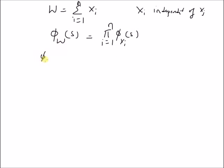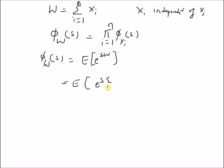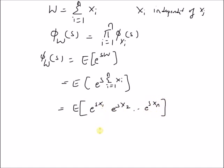Starting with the definition of the moment generating function, we have the expectation of e^(s·W). Using the definition of W, this is the expectation of e^(s · sum_{i=1}^{n} x_i), which equals the expectation of e^(s·x_1) · e^(s·x_2) · ... · e^(s·x_n), i.e., a product of n terms where the i-th term is e^(s·x_i).